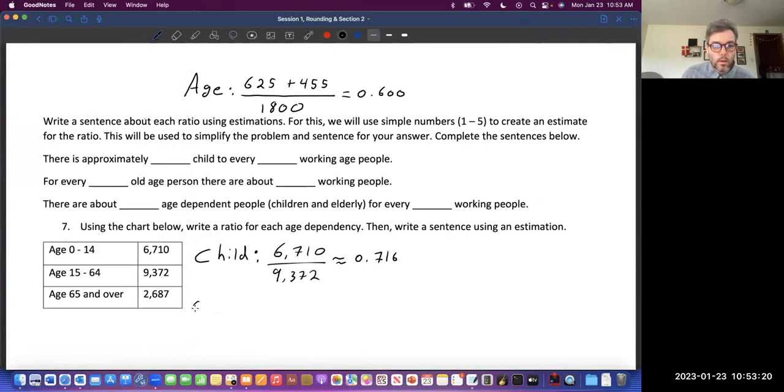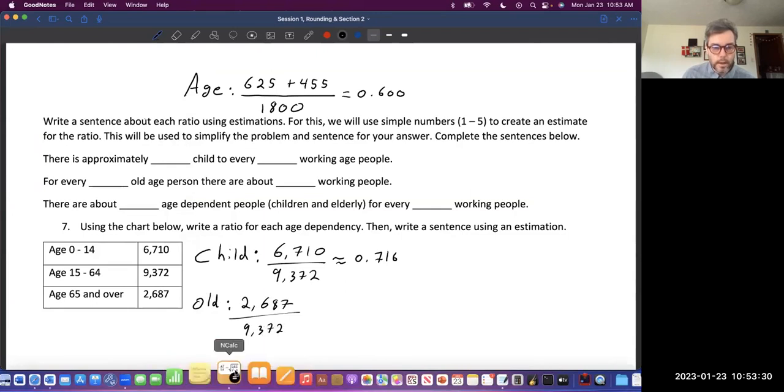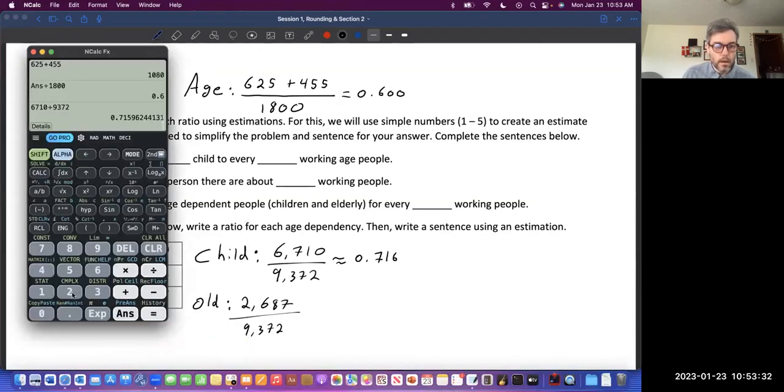The old age dependency ratio is the 2,687 divided by the working. 2,687 divided by 9,372, and that is approximately 0.287.